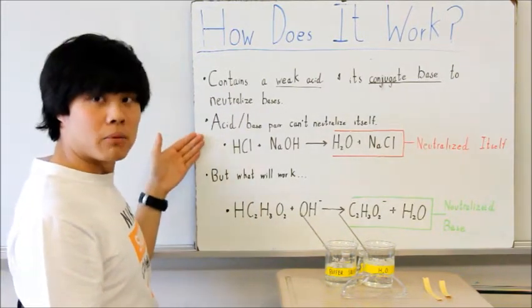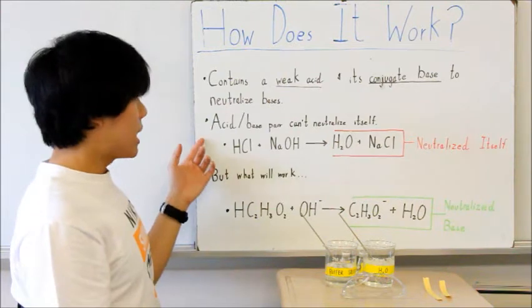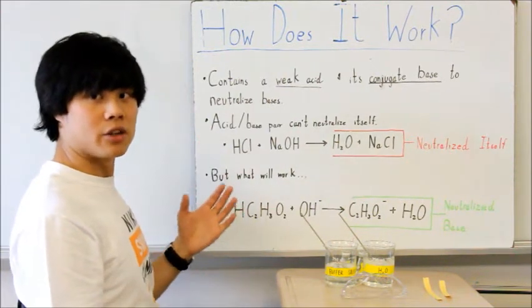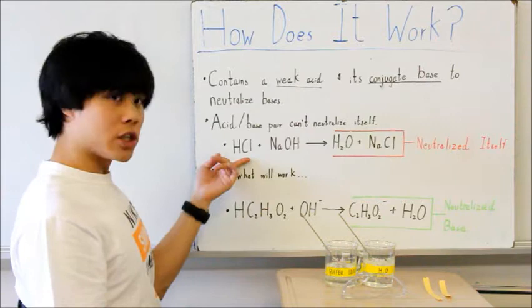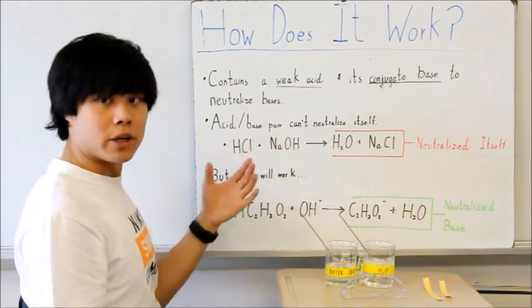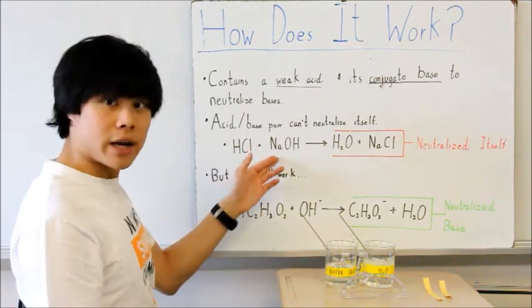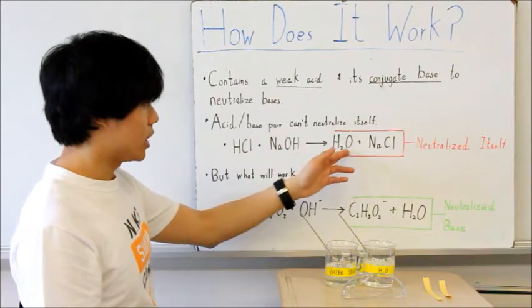Now, there are a few rules to keep in mind when you're making a buffer. The acid-base pair that you're using can't neutralize itself. So if you use HCl and NaOH to make your buffer, this is a neutralization reaction, therefore producing H2O and salt.